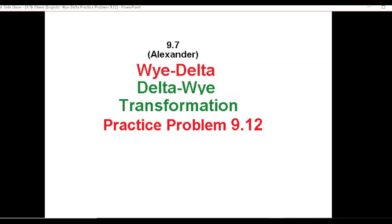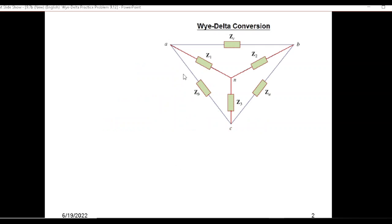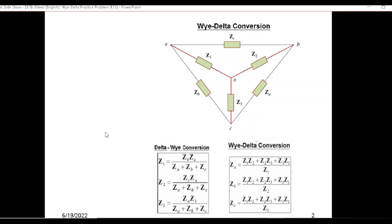This is the second part on Y-delta transformation, and here we'll be solving practice problem 9.12. This is exactly the same as the solved example 9.12. The techniques I'm going to repeat: this is the delta circuit and this is the Y circuit. We can easily convert from delta to Y or Y to delta by following these formulas.